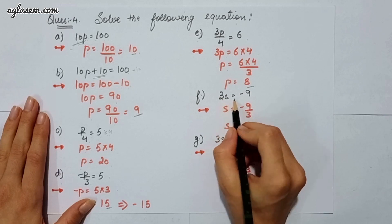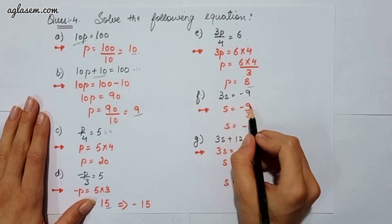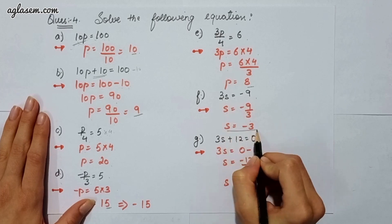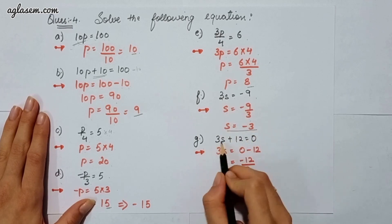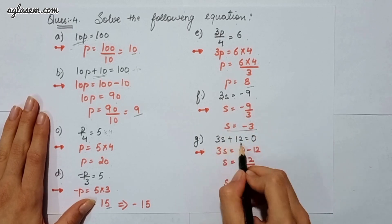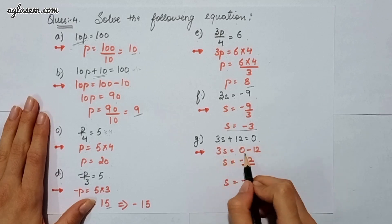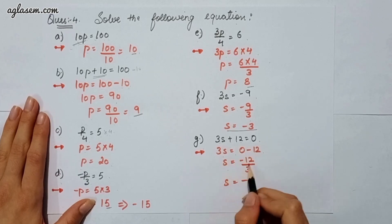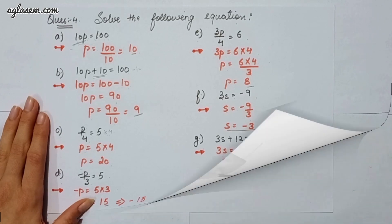The f part says 3s is equal to minus 9. So s is equal to minus 9 upon 3, which gives s as minus 3. The g part says 3s plus 12 is equal to 0. So 3s is equal to minus 12, and s is equal to minus 12 upon 3, which gives s as minus 4.